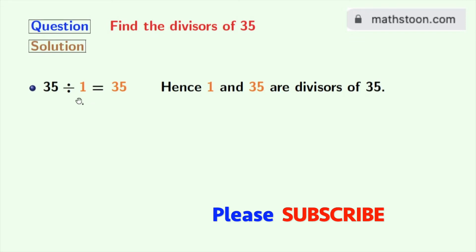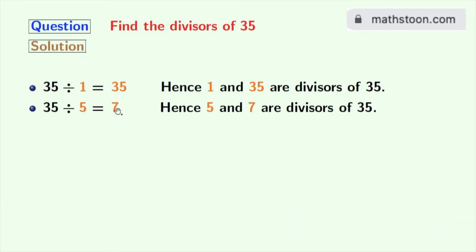Next, numbers 2, 3, and 4 do not divide 35. So, we will try 5. And see that 35 divided by 5 equals 7. So, 5 and 7 are the divisors of 35.